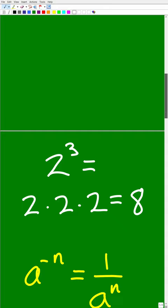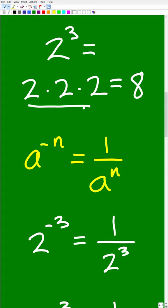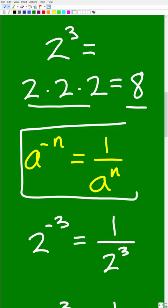So 2 to the negative third power. Well, let's go ahead and make sure you understand what 2 to the third power means. That means take 2, multiply it by itself two times. Of course, the answer is 8.